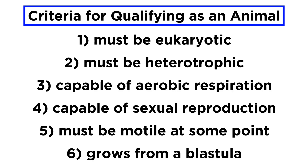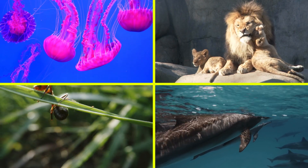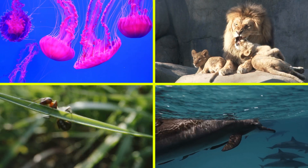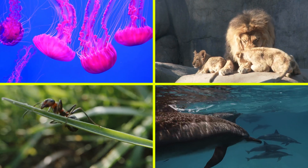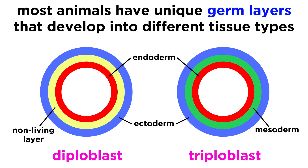We now have a general sense of what animals are and how they initially emerged hundreds of millions of years ago. So now it's time to get a better sense of the features of animals and their formation. Though some animals, most notably the sponges, completely lack true tissues and organs, most animals have unique germ layers that develop into different tissue types.